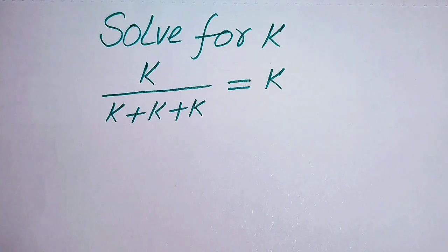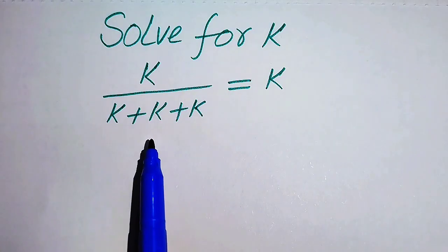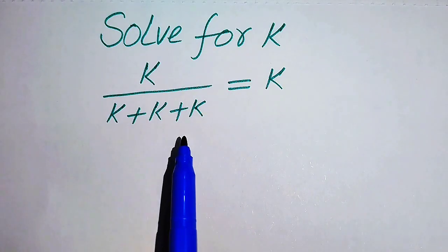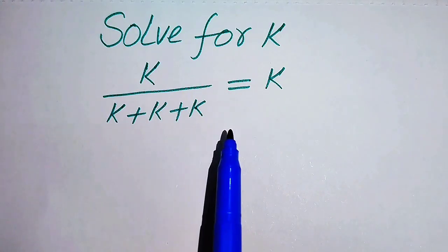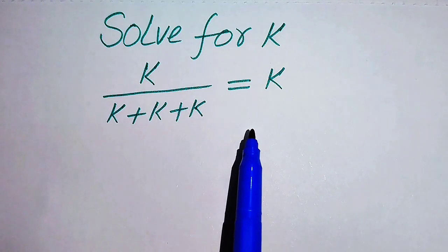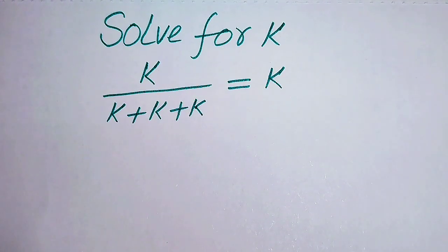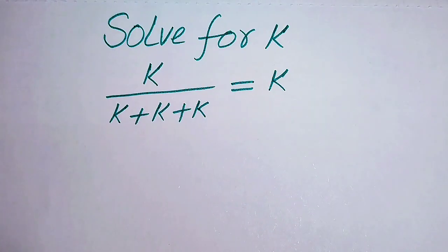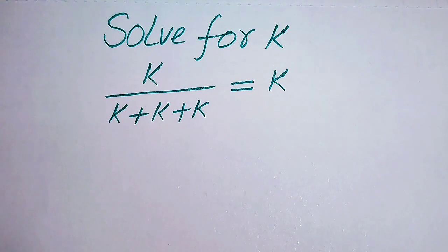Hello everyone, welcome. We'll solve this algebra problem: k divided by (k + k + k) equals k. We need to find all the roots of this equation, and at the end we will verify which roots are solutions and which are extraneous roots.